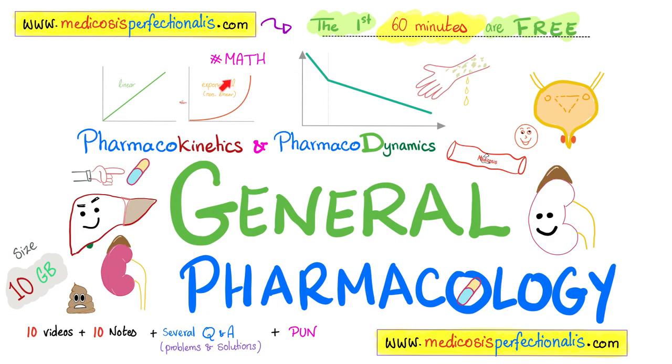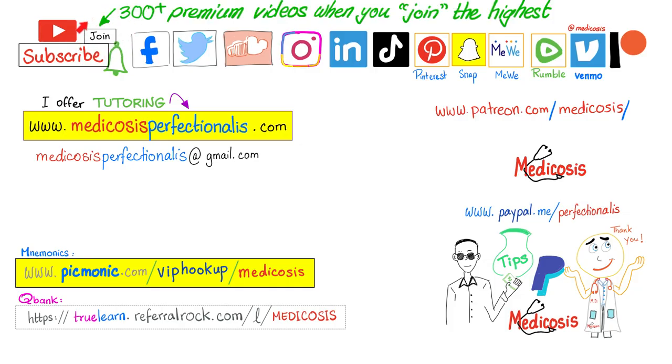Are you struggling with the math, the equations, the graphs of pharmacokinetics and pharmacodynamics? Then you can download my general pharmacology course. It will help you cruise through these topics like a sharp knife in warm butter. Download it today at medicosisperfectionality.com. You can also download my chemistry notes on the same website. By joining my membership program on YouTube, you can get instant access to more than 300 premium videos if you choose the highest tier. Smash like, subscribe, hit the bell, support my channel here or here. Go to my website to download my courses, notes, and cases. Be safe, stay happy, study hard. This is medicosisperfectionality, where medicine and chemistry make perfect sense.